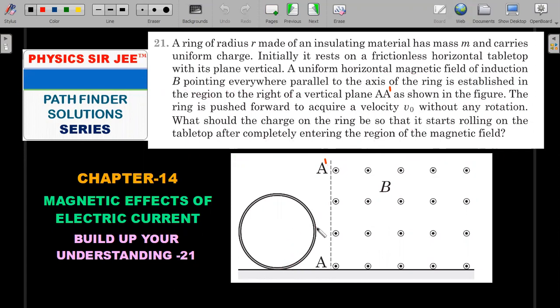So it will continue to move till it enters the region. What should the charge on the ring be so that it starts rolling on the tabletop after completely entering the region of magnetic field? So once it enters completely, it should be starting to roll purely on the surface. For that to happen, what is the value of the charge that is there on the ring which is uniformly distributed?